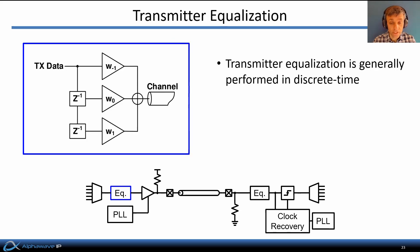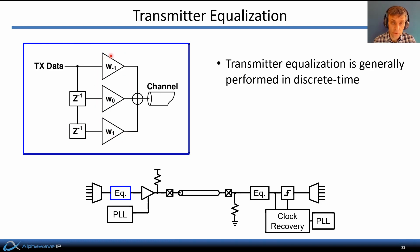The transmitter equalization is generally performed in discrete time by taking a weighted sum of delayed copies of the transmitted data as shown here. The W terms are the tap weights of the transmit filter, and together this forms a finite impulse response, or transmit FIR equalizer.